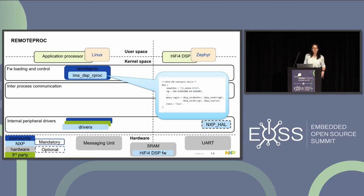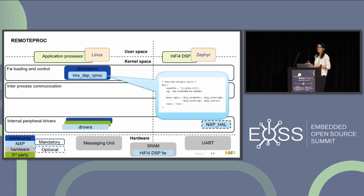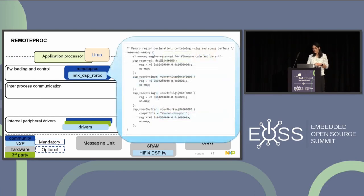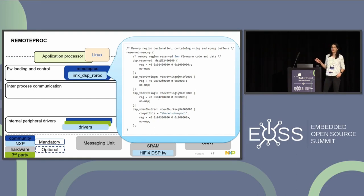To have our specific Remote Proc driver, we have to define the DSP node in the device tree on the Linux side, and similarly in Zephyr. In the DSP node, we define the compatible — based on this, we load the IMX DSP RProc driver. We also need to define the memory region properties, which specify the buffers and rings, base addresses, and sizes. This is used for firmware code and data, and also for inter-process communication. An important aspect is that these addresses must be associated with the memory mapping from the linker script in Zephyr.